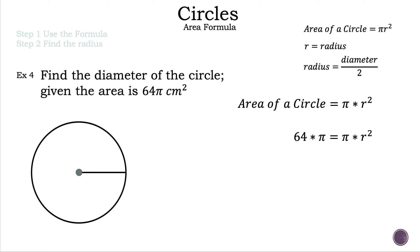We solve for r, which is on the right-hand side. Since we have pi times, we do the inverse and divide. Dividing the right-hand side by pi — pi divided by pi equals 1, those cancel. Doing the same to the left-hand side, pi divided by pi cancels, leaving us with 64 equals r squared.